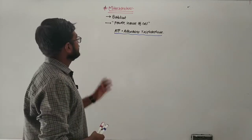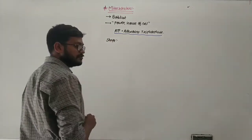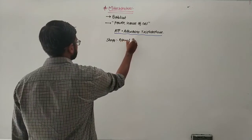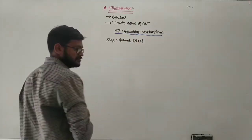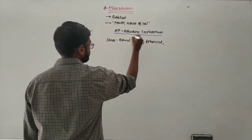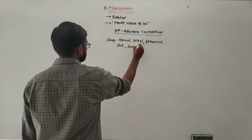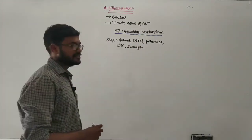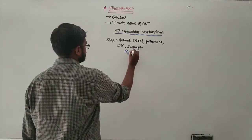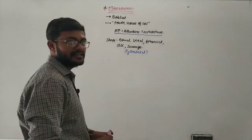The shape of mitochondria varies greatly. The shape can be round, spiral, spherical, disc-shaped, or sausage-shaped — that is, cylindrical in shape.